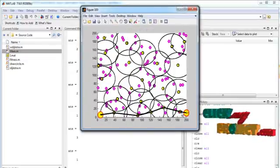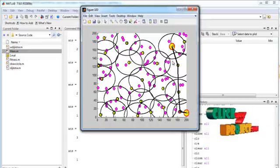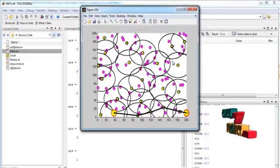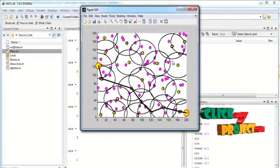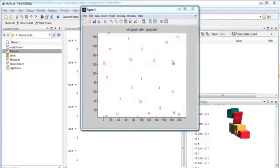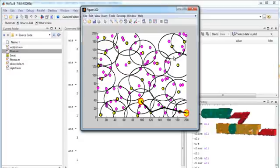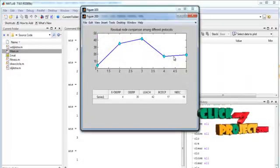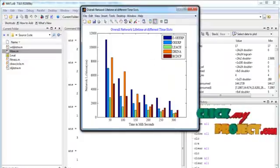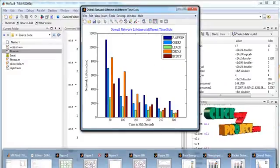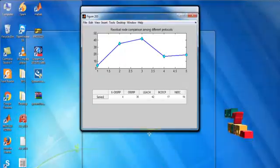These shortest paths are found by using gravitational search algorithm. This process will be repeated for the entire cluster heads which are deployed in the network. Once the cluster head operation and cluster formation are completed, we analyze the performance analysis graph.